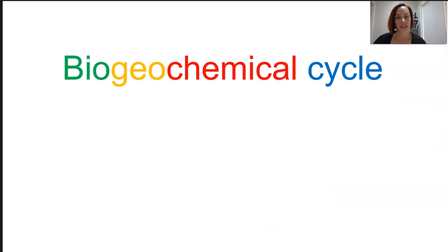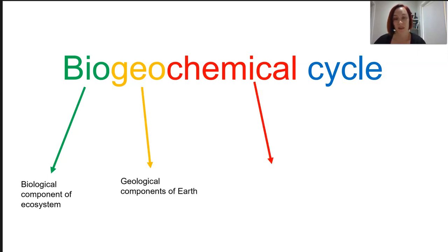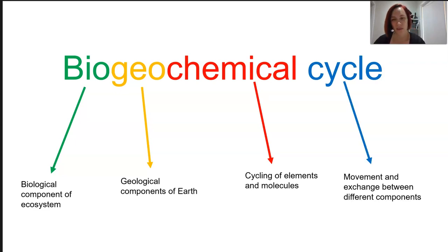So we are talking about biogeochemical cycles today. And the bio obviously is the biological component of this. The geo is the geological component of the Earth. The chemical cycles, it's the fact that we're talking about elements and molecules. And the cycle part is that we're talking about movement and exchange between different components of our environment.